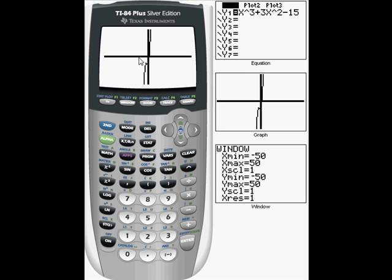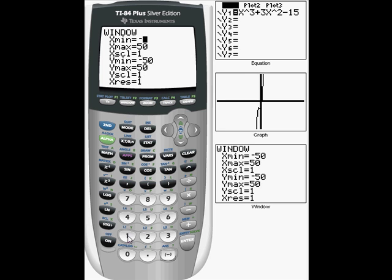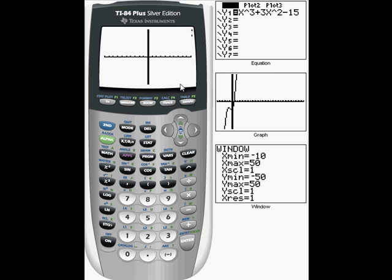I'm going to change my window. So when I go into window, I'm going to change my x minimum back to negative 10, my x max back to positive 10. And I'm going to graph it again.